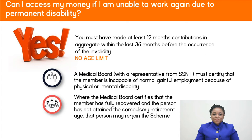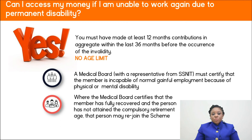Can I access my money if I am unable to work again due to permanent disability? Yes — you must have made at least 12 months of contributions in aggregate within the last 36 months before the occurrence of the invalidity. There is no age limit. A medical board with a SNIT representative must certify that the member is incapable of normal gainful employment due to physical or mental disability. Where the medical board certifies full recovery and the person has not attained compulsory retirement age, that person may rejoin the SNIT scheme.